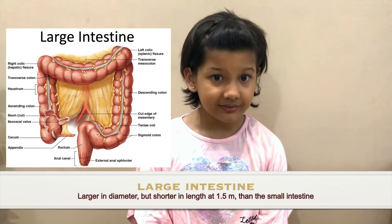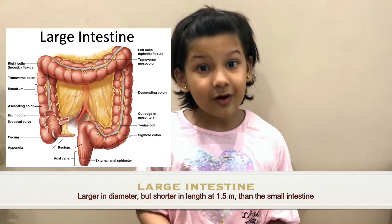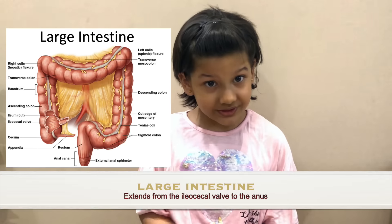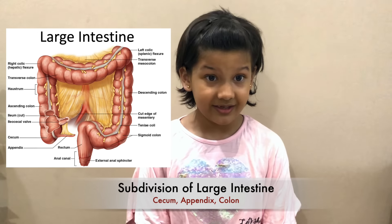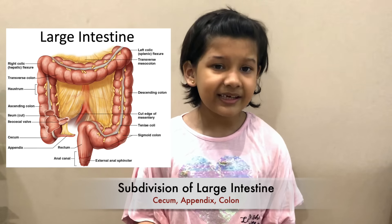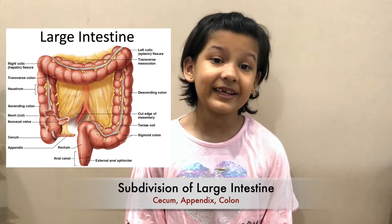When all the nutrients are absorbed, the food has now turned into waste. The waste goes through the ileum via a valve known as the ileocecal valve and into the first component of the large intestines, that's the cecum. The large intestines is also known as the large bowel. Hanging on the cecum we have the appendix, which has no known function.